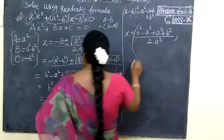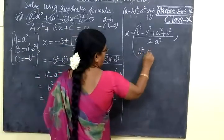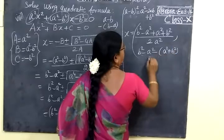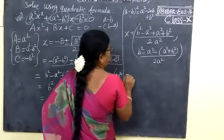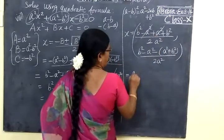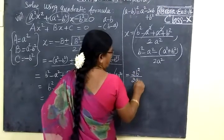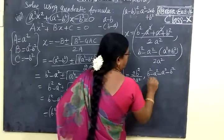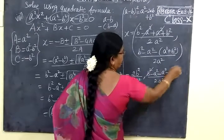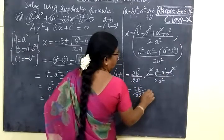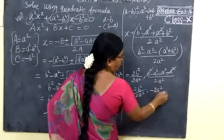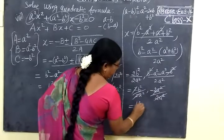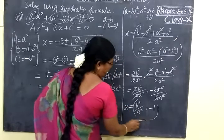So for the plus case: B² - A² + A² + B² by 2A². Here +A² and -A² cancel, giving 2B² / 2A². For the minus case: B² - A² - A² - B² by 2A², which gives -2A² / 2A², so that gives -1. So the two values of x are: B²/A² and -1.